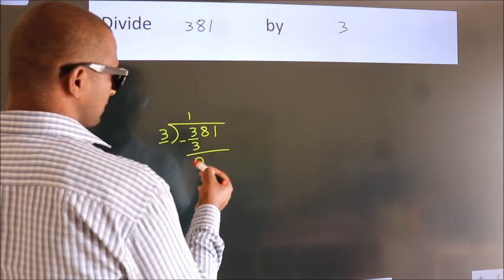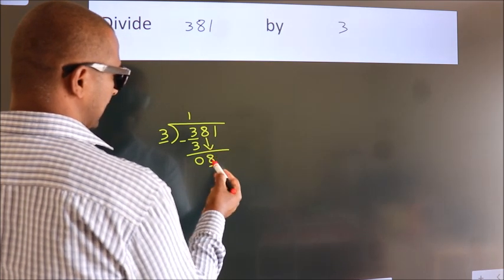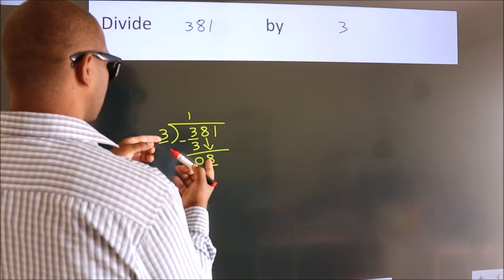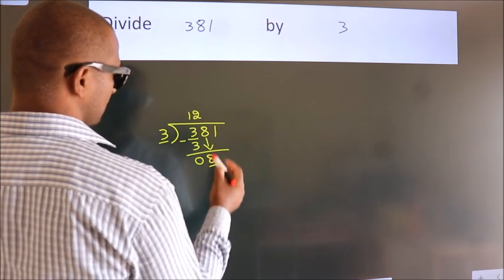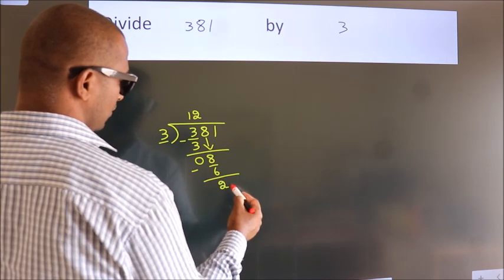After this, bring down the beside number. So 8 down. So 8. A number close to 8 in the 3 table is 3 times 2 is 6. Now we subtract. We get 2.